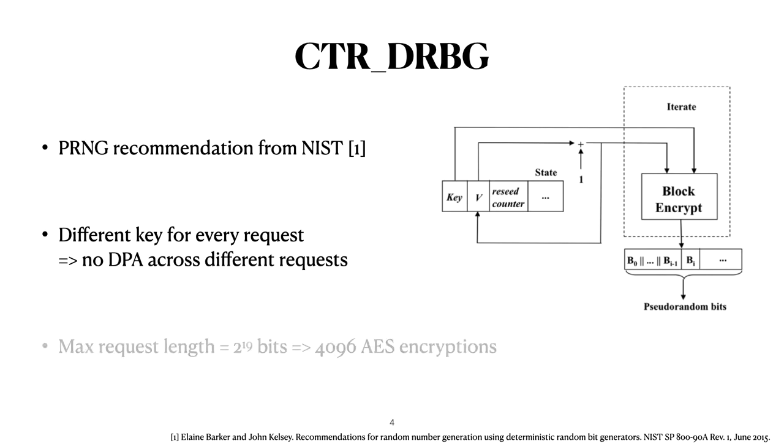NIST also specifies that the maximum size of a single request is 2 to the power 19 bits. Now in the case of AES which has a 128-bit state this means that there are only at most 4096 encryptions per request. So that actually means that Jaffe's attack is prevented because it needs more traces than 4096 traces.